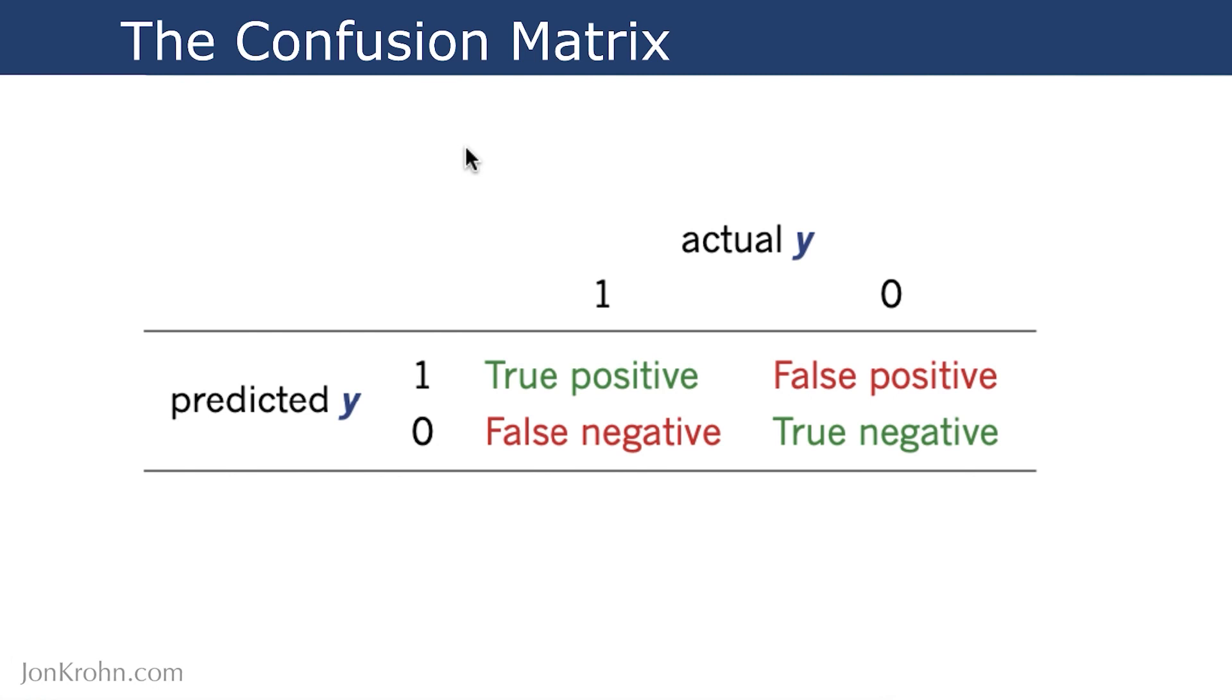There are four possible scenarios in the confusion matrix. Up here, this actual Y corresponds to the real state of the world.